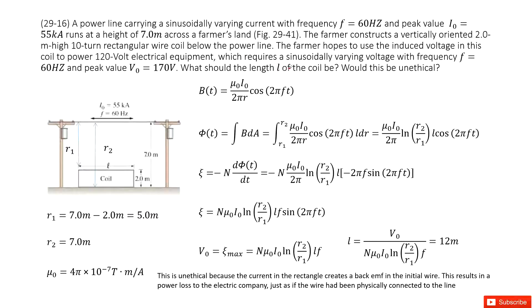And then it asks you the length L. What should the length L of the coil be to make this coil carry the voltage with frequency f as 60 Hz and peak value as V₀?